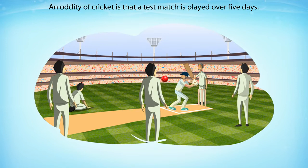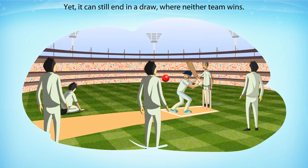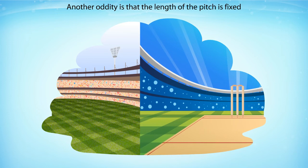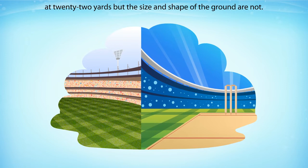An oddity of cricket is that a test match is played over 5 days, yet it can still end in a draw where neither team wins. Another oddity is that the length of the pitch is fixed at 22 yards, but the size and shape of the ground are not.